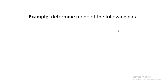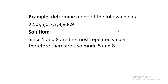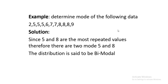The second example asks us to determine the mode of the data: 2, 5, 5, 6, 7, 7, 8, 8, 8, 9. Here, 5 appears twice and 8 appears three times — wait, both 5 and 8 are the most repeated values, each appearing the same number of times. So both 5 and 8 are the mode, and this type of distribution is called bimodal because there are two modes.